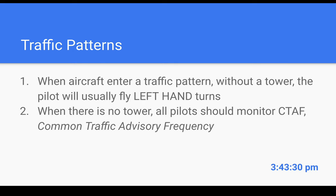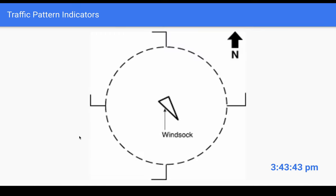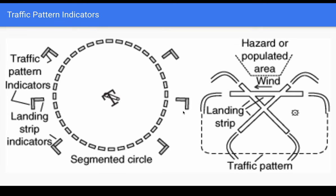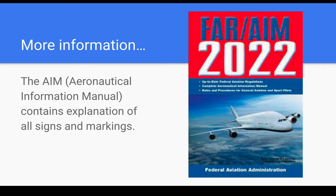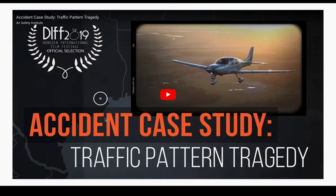When there's aircraft in a traffic pattern without a tower, pilots usually fly left-hand turns. When there is no tower, all pilots should monitor CTAF — the Common Traffic Advisory Frequency. At some airports you'll see markers indicating the pattern direction per runway — for example, left-hand turns to runway 9 and right-hand turns to runway 27. For more information, you can always look it up in the AIM, the Aeronautical Information Manual, which has information about signs and markings.